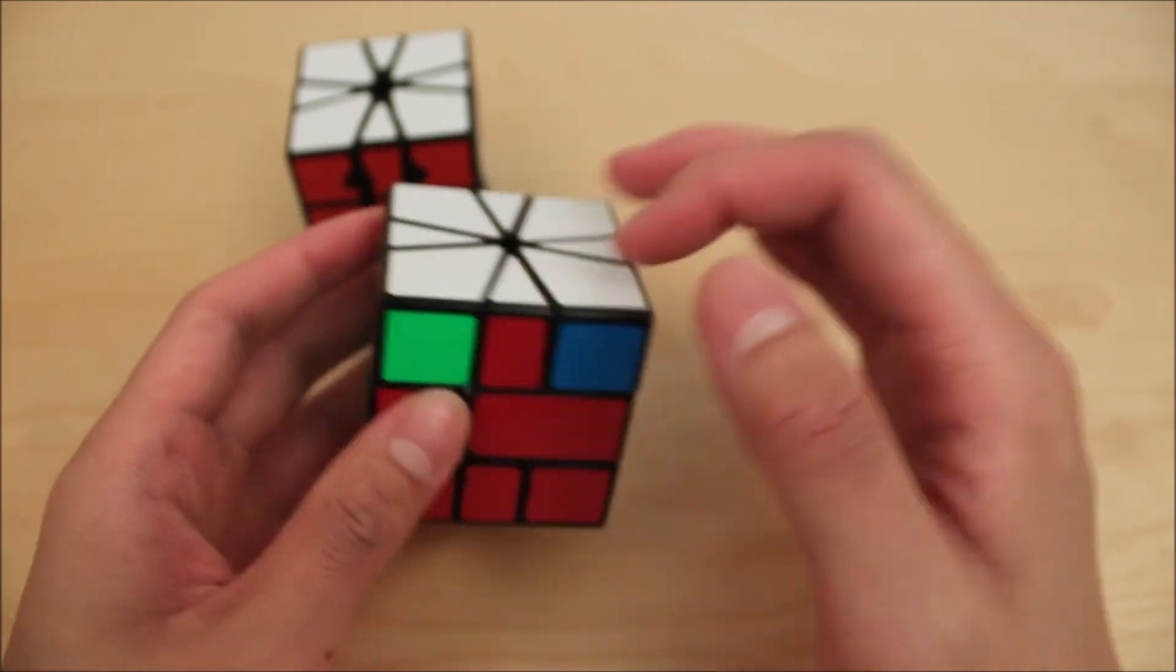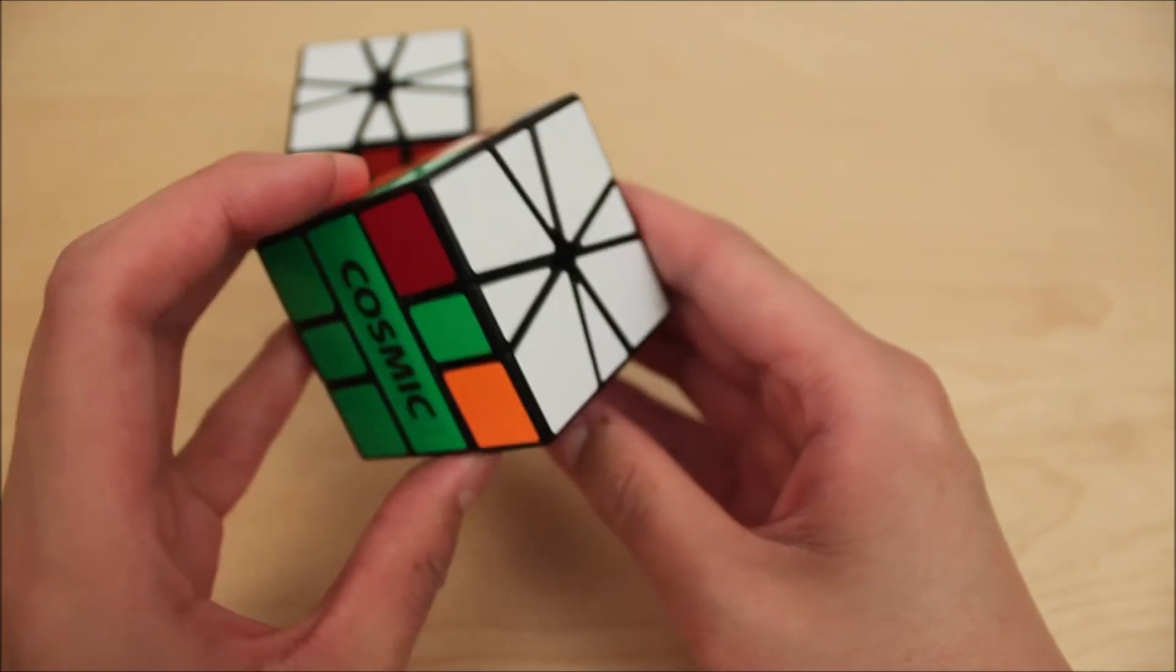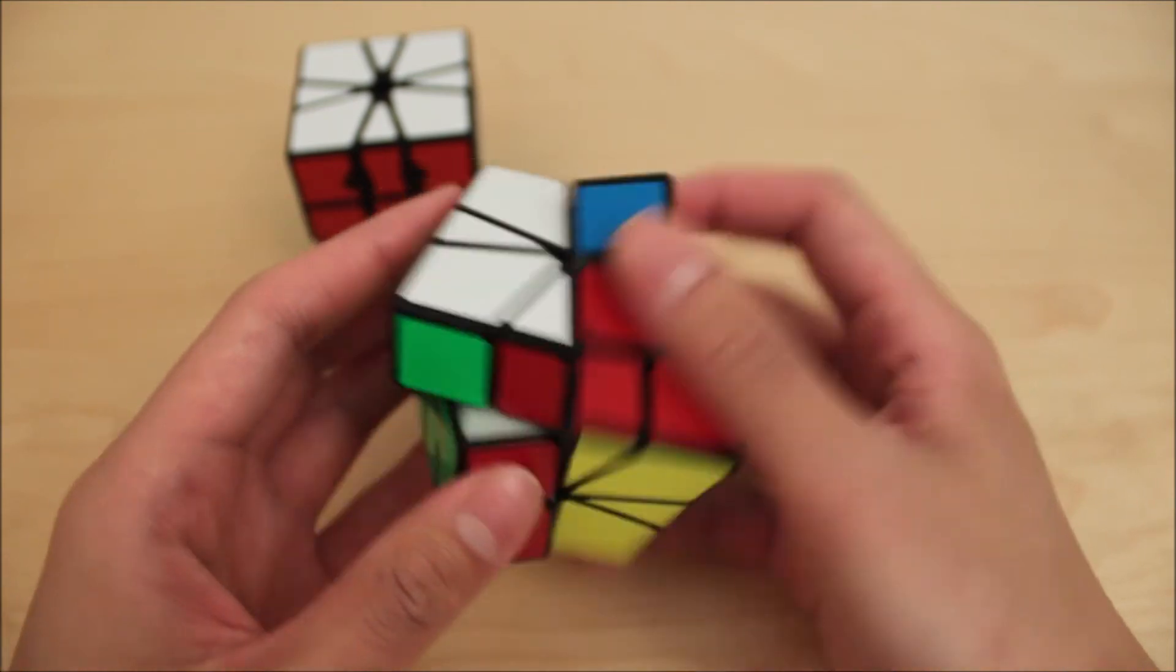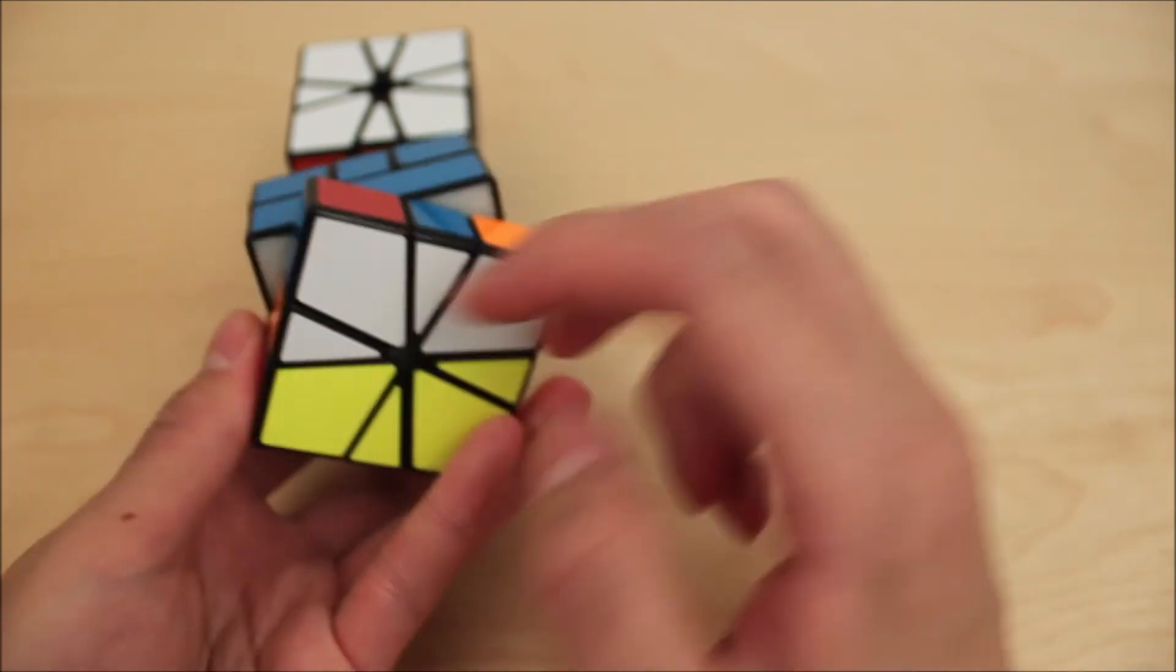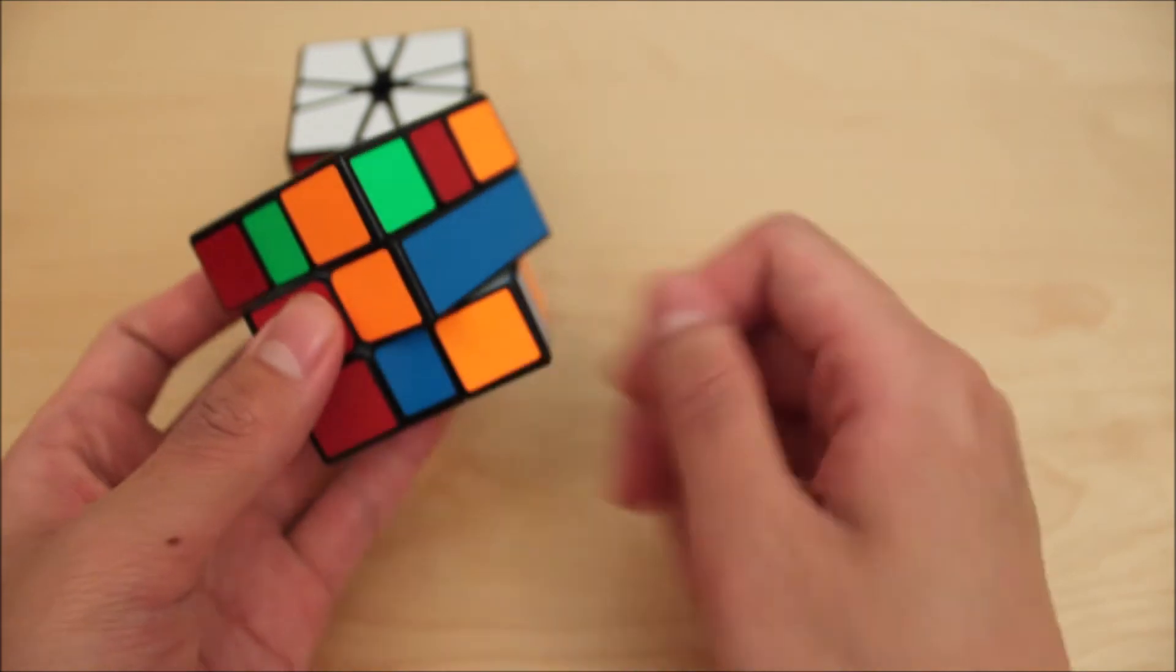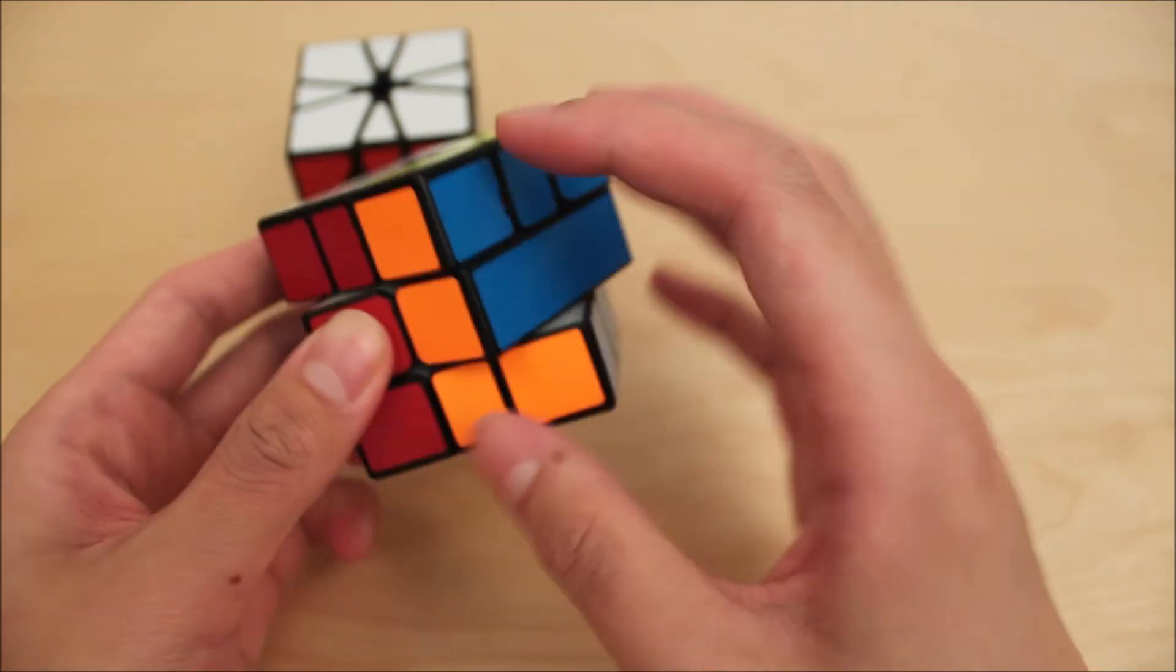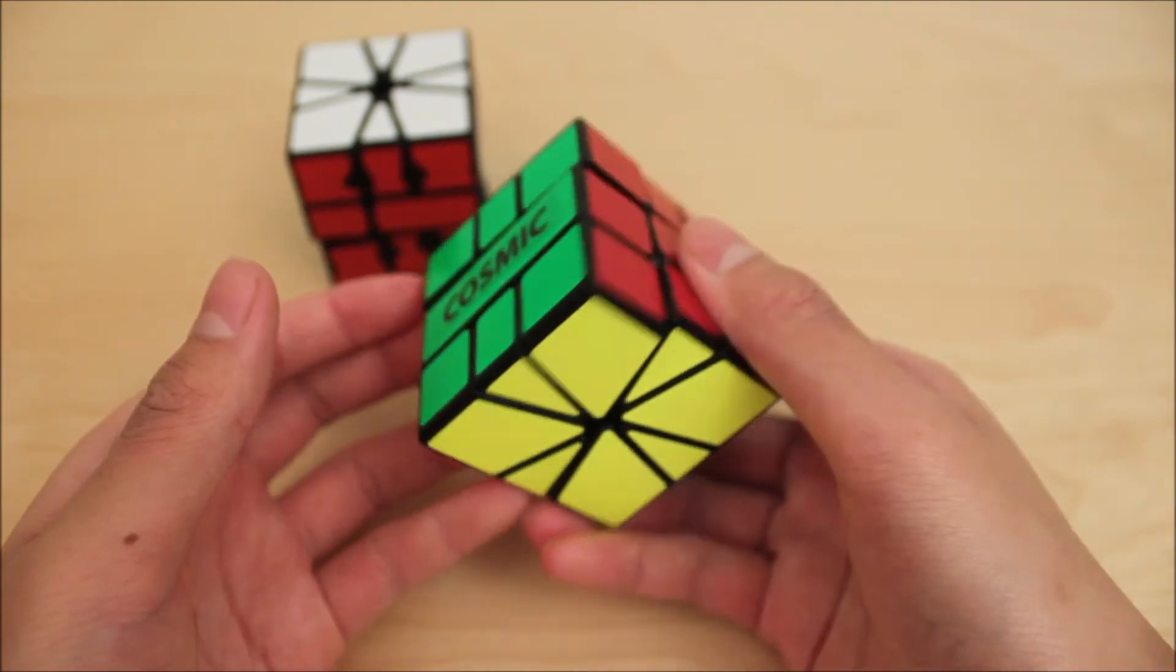You can do this with one E-perm as well. It's a bit weirder, though. You want to do a setup move, like this, and you've got these corners after you've swapped, so move it like this, PJPJ, and you can just undo the setup move.